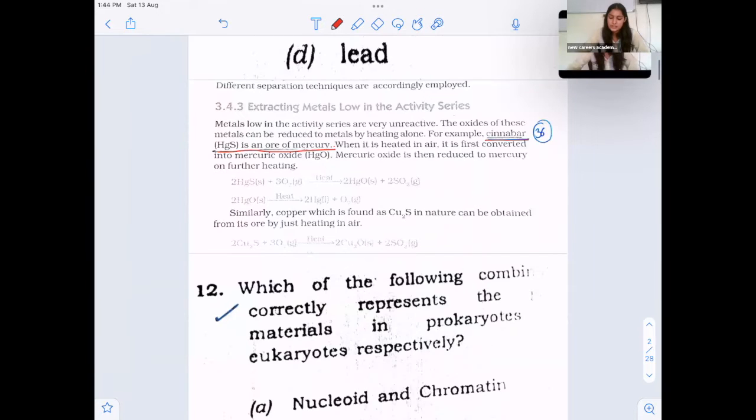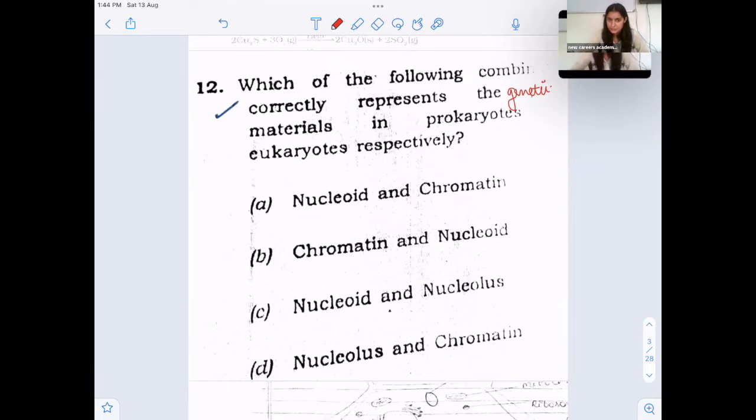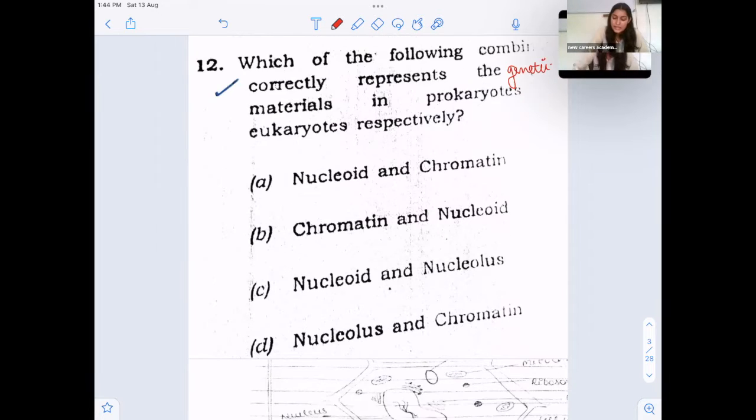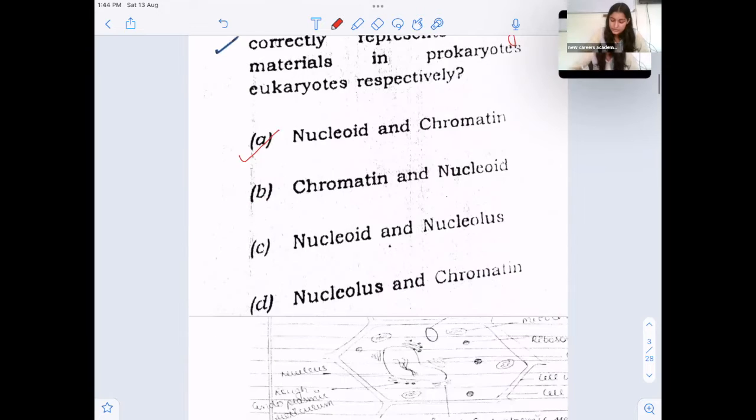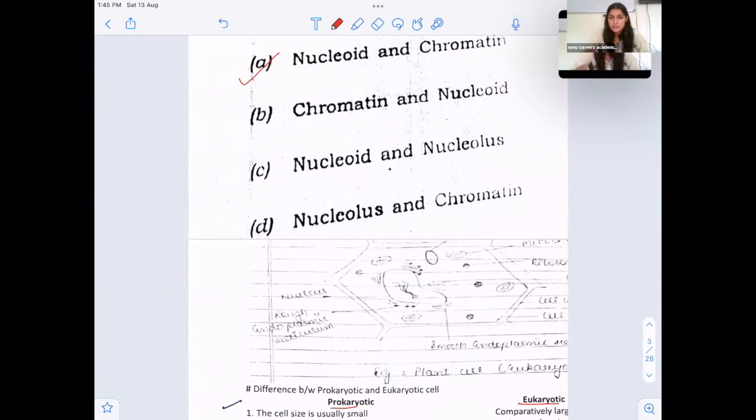Second question, which of the following correctly represents the materials in prokaryotic and eukaryotic respectively. So here they asked about genetic material in prokaryotic and eukaryotic cell type. You know that prokaryotes, they lack nucleus, they have nucleoid and in eukaryotes, the genetic material DNA is present in the form of chromatin in supercoiled form. So answer is nucleoid and chromatin option A. So here it is given in notes, these are the differences between prokaryotic cell type and eukaryotic cell type. Nucleolus is a stained material, stained body present in eukaryotic nucleus.